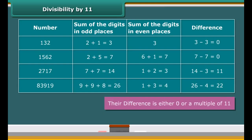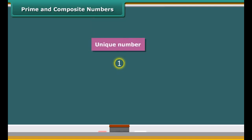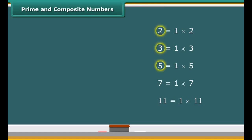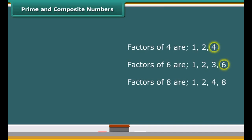Look at the number 1. It has only one factor: the number 1 itself. 1 is a unique number. Look at the numbers 2, 3, 5, 7, etc. These numbers have exactly two factors: 1 and the number itself. Numbers that have only two factors are called prime numbers. Some other numbers like 4, 6, 8, etc. have more than two factors. Numbers that have more than two factors are called composite numbers. The number 1 is neither prime nor composite. 2 is the smallest prime number. It is also the only even prime number. All other prime numbers are odd.